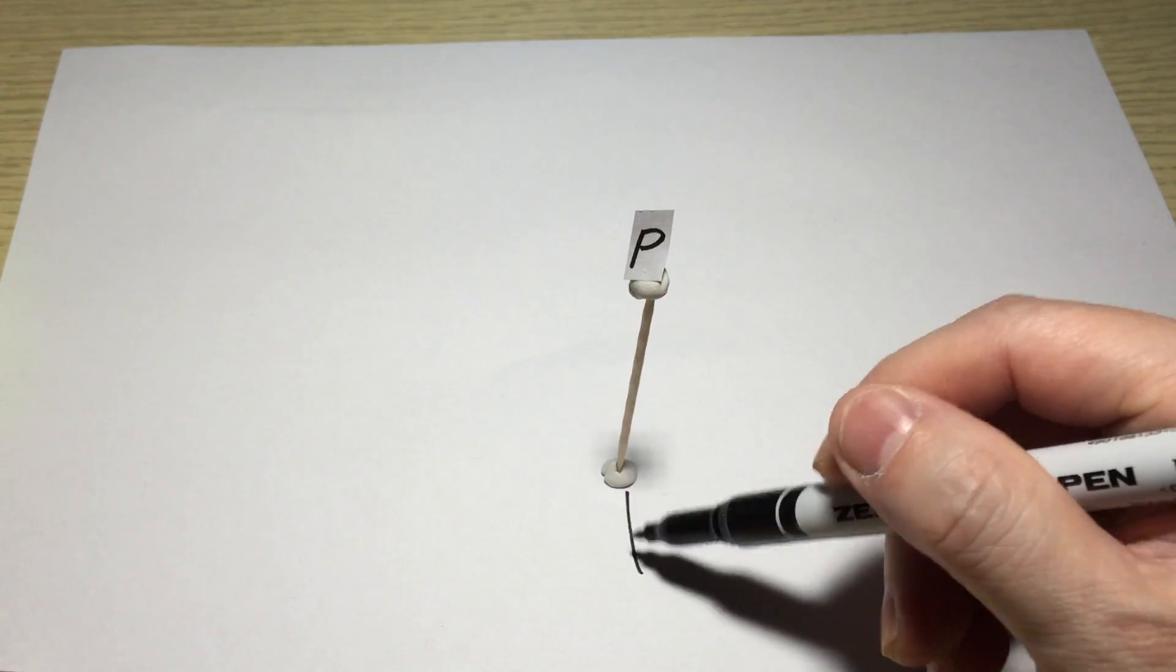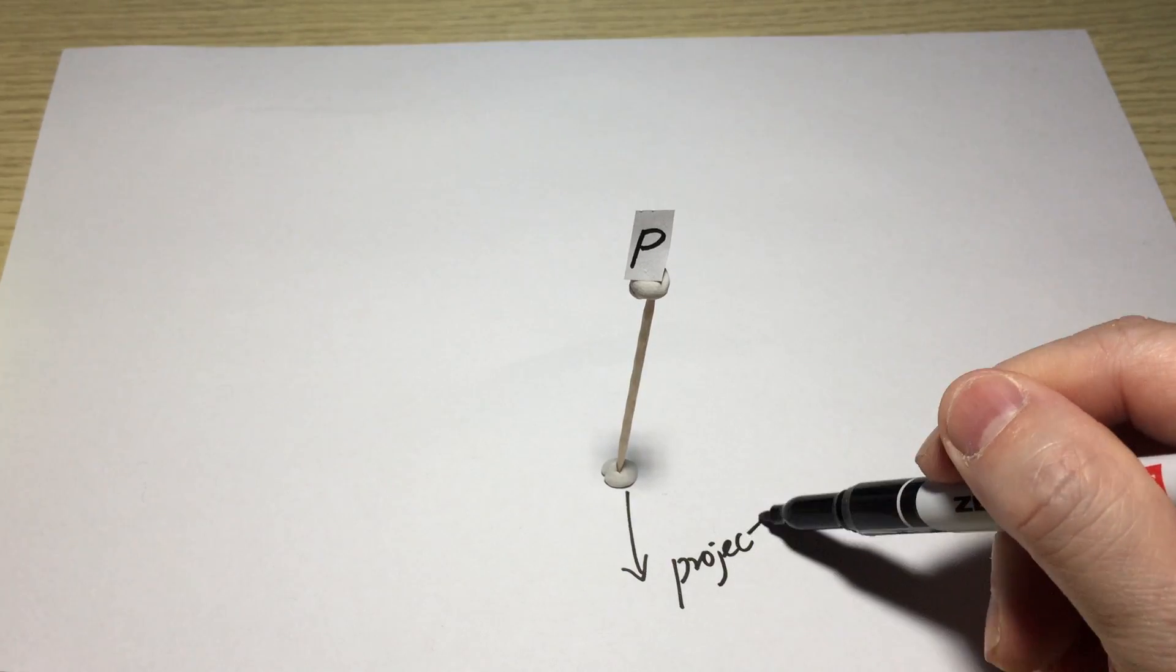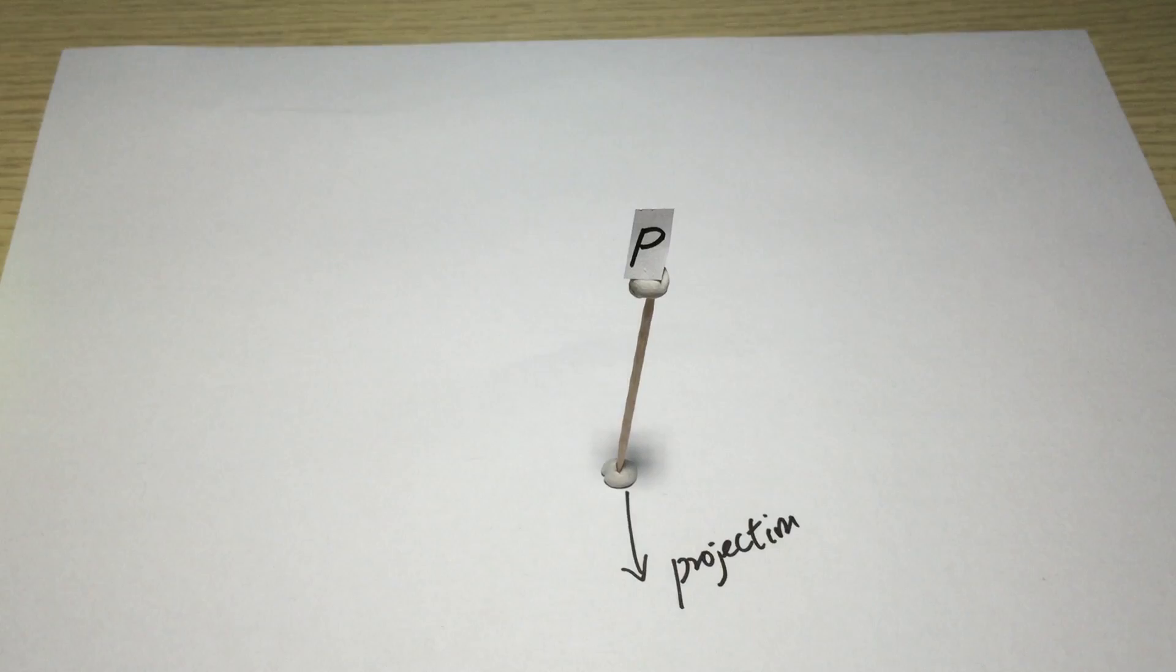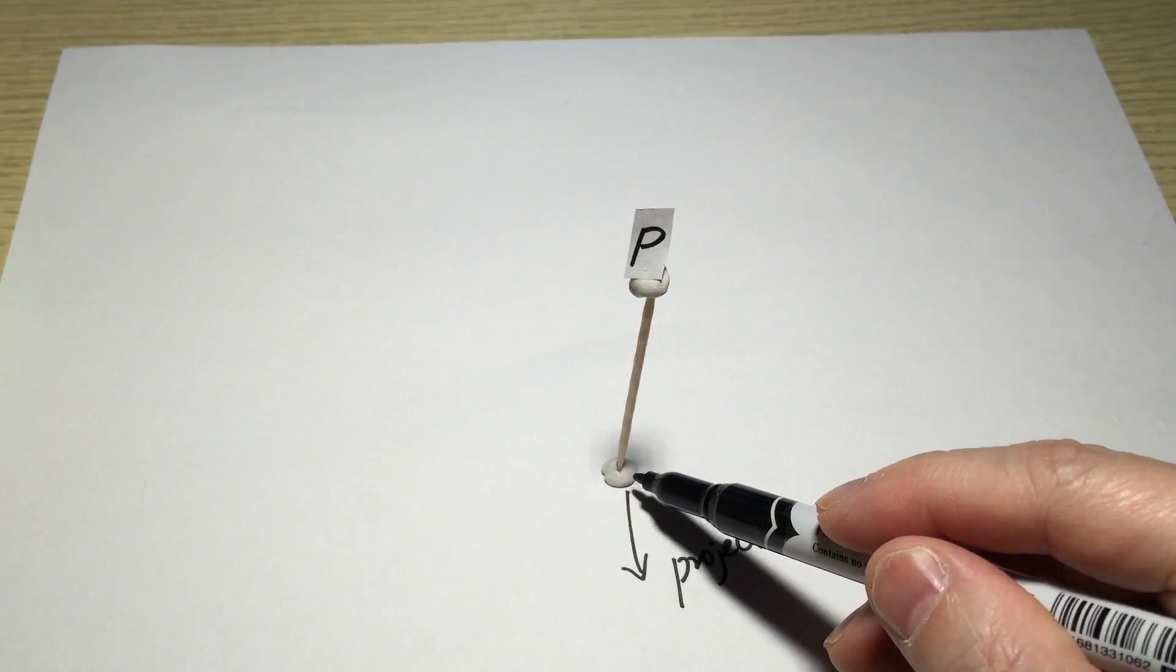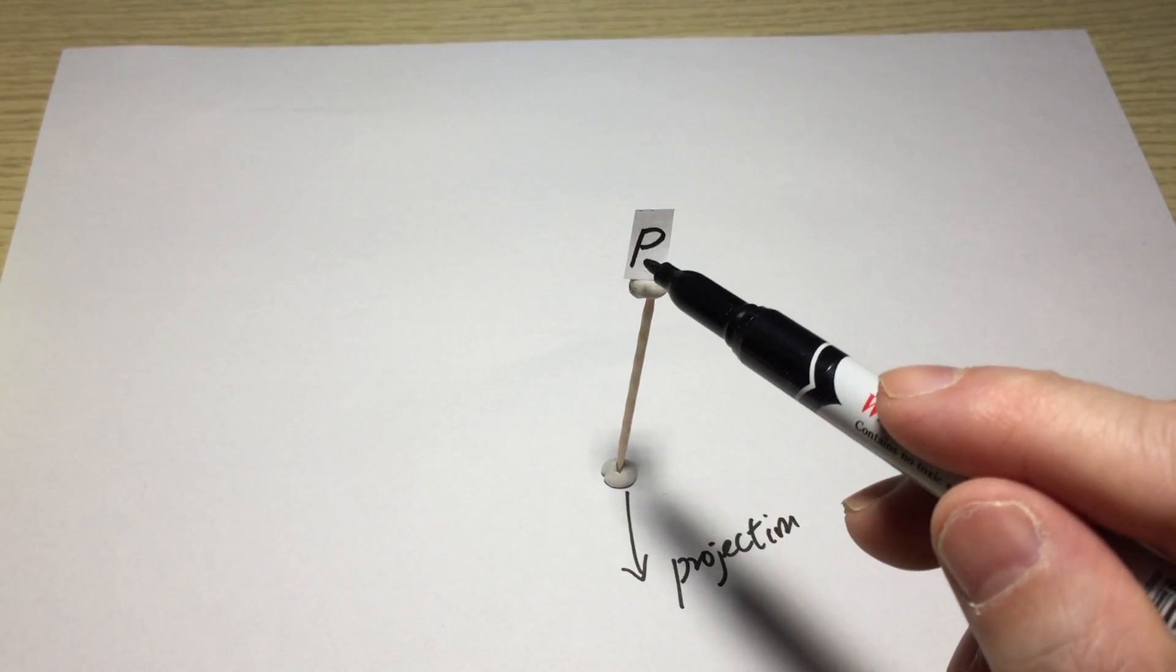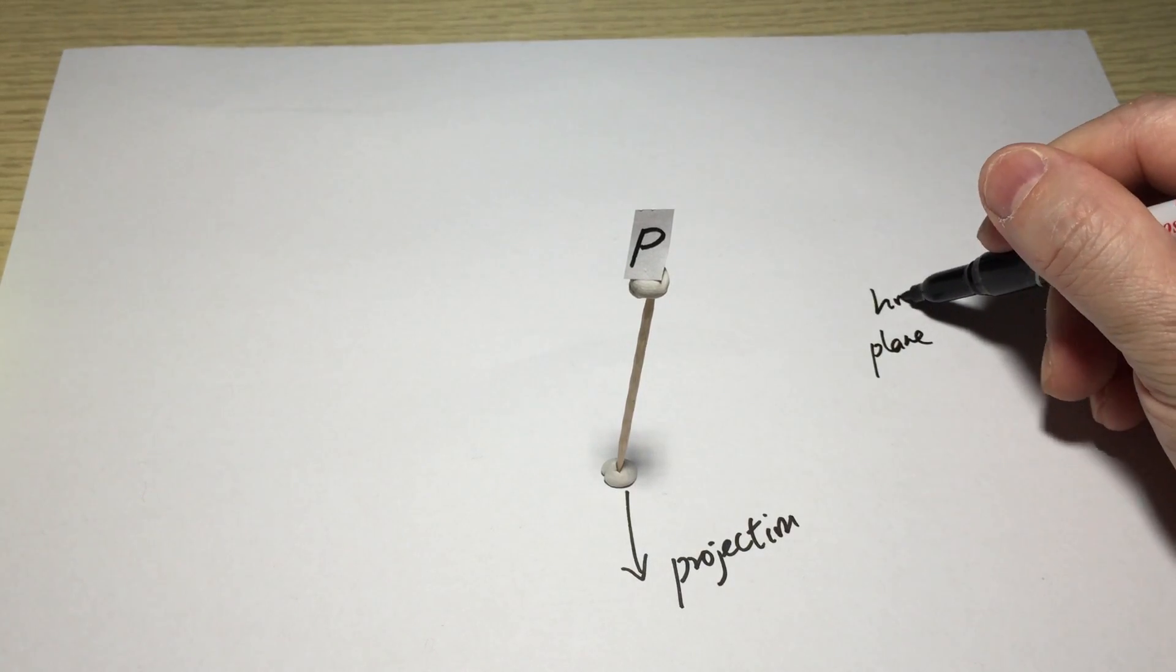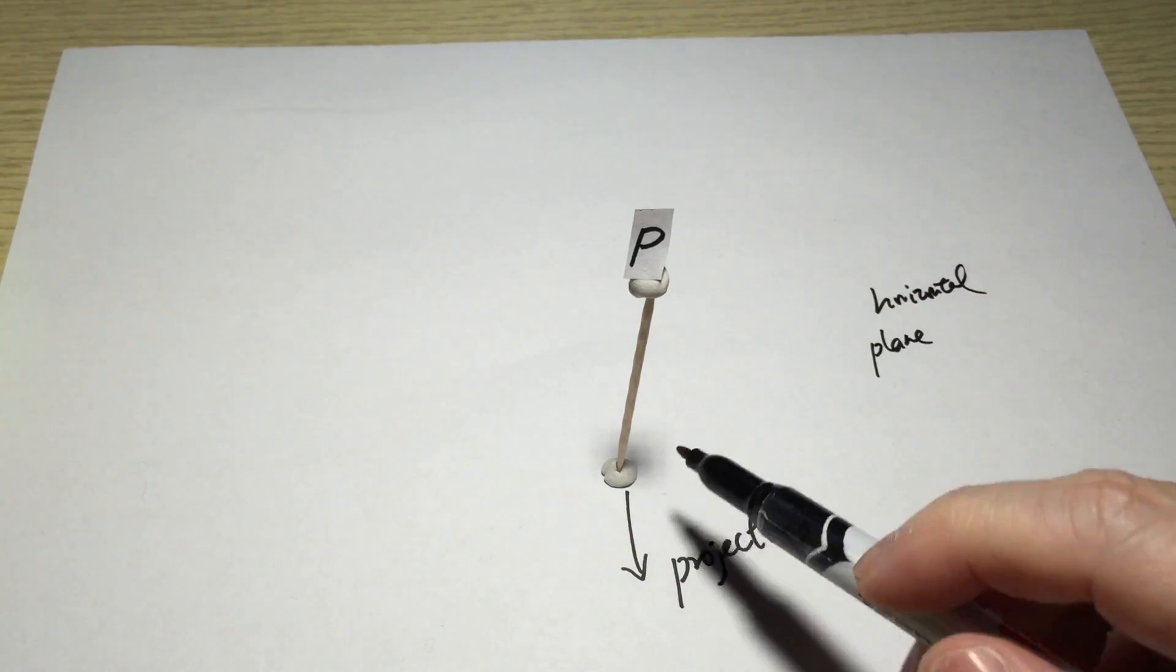And we call this in mathematics the projection of point P on this white plane. And if this is the projection, then the distance between point P and this plane - so this is a horizontal plane - will be this length of the toothpick.